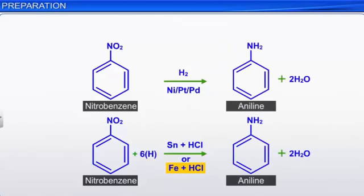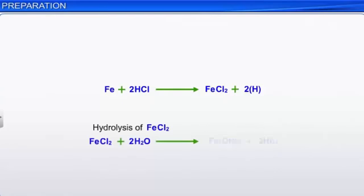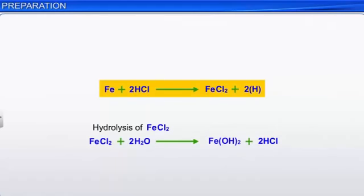Reduction with iron scrap and hydrochloric acid is preferred over tin and HCl. This is because the ferrous chloride formed in the reaction undergoes hydrolysis and releases hydrochloric acid. Thus, only a small amount of hydrochloric acid is required to initiate the reaction.